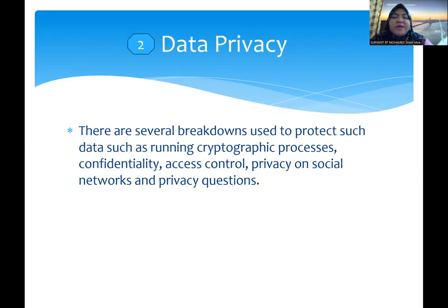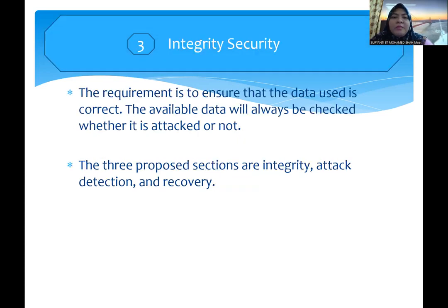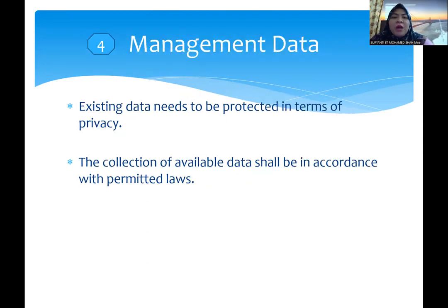Data privacy: there are several breakdowns used to protect data, such as running the protection process for confidential access control, privacy on the social network, and privacy protection. Integrity security: the requirement is to ensure that the data used is correct. The data will always be checked whether it is attacked or not. There are three purposes: selection, detection, and recovery for integrity. For data management, data needs to be protected in terms of privacy, collection, and availability, and data shall be managed according to applicable law.